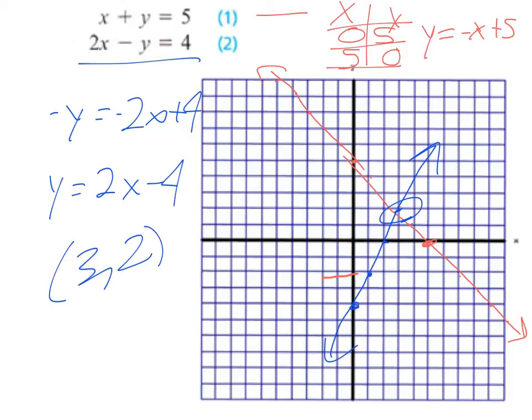If you check in both equations, it does work: 3 plus 2 is 5, and 2 times 3 is 6, take another 2 away and you do get 4.